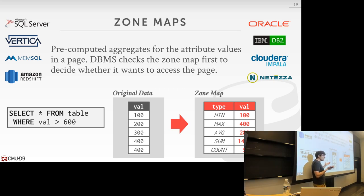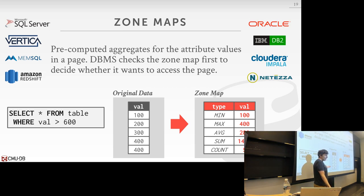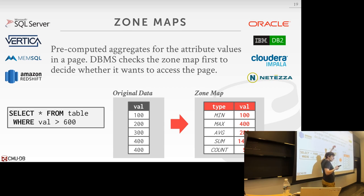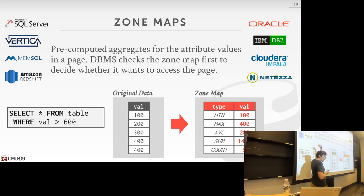One issue with zone maps is maintenance: any time you update data in a page, you must keep the zone map in sync to avoid false negatives — where the zone map says no match but there actually is one. These are typically used for analytical systems, not OLTP, because maintaining them on every write is too expensive. For analytics where data is mostly write-once and read-many, zone maps are a big win.